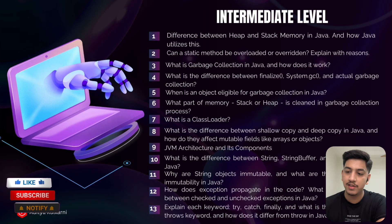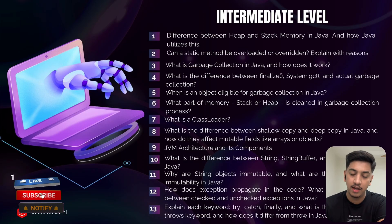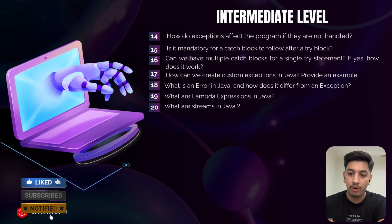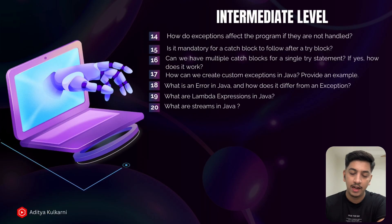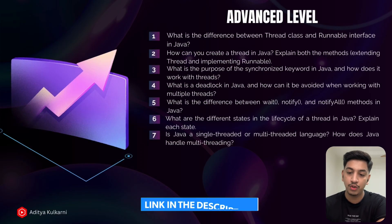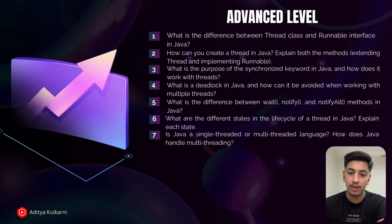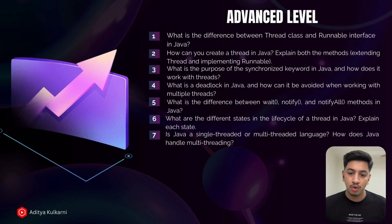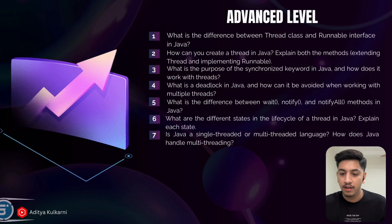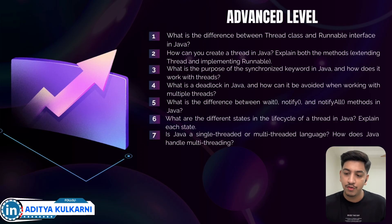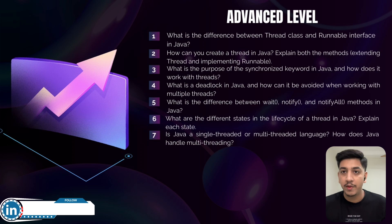The intermediate level focuses on constructors, static keywords, access modifiers, exception handling, lambda expressions, and more — these are commonly asked during interviews. The advanced level focuses on multi-threading, thread lifecycle, synchronization, collections, and even deadlock scenarios. These questions are not just theoretical; Cognizant interviews often ask for real-life examples or your own explanations, so don't just memorize the definitions.